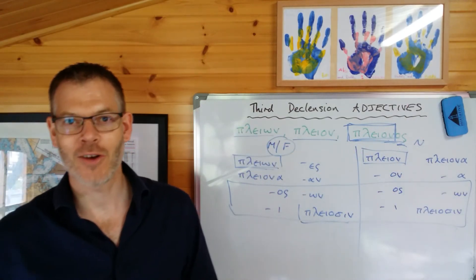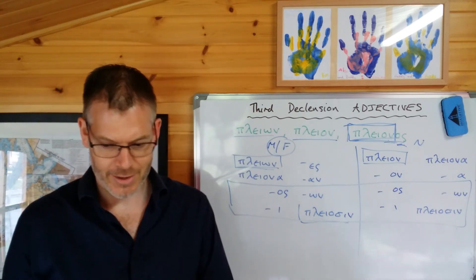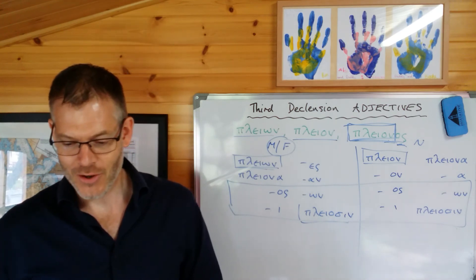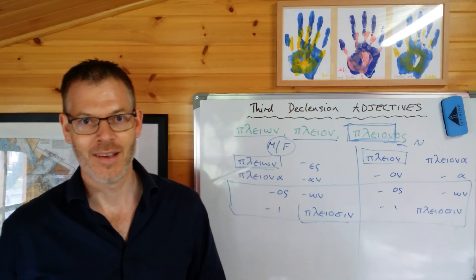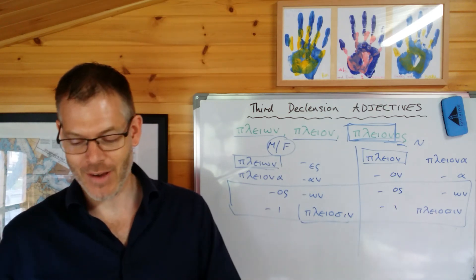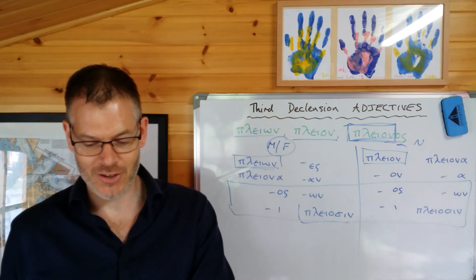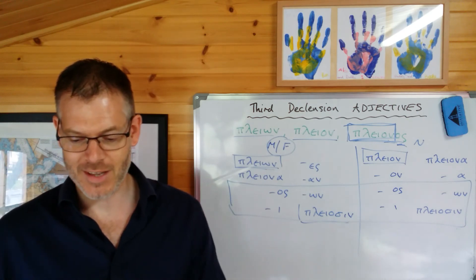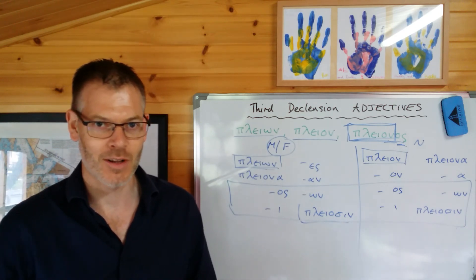It looks horrendously complicated because you've got this massive table to learn at the top of page 139, but it's really, really simple. You knew it already — you could have figured it out just from what you already knew. Not complicated. Keep going: 20 to 30 minutes a day, five or six days a week, and we will nail this stuff and have you reading the New Testament in Greek in no time at all. We're almost at the end of this chapter — we've just got a couple of other sections to go, then we'll do some examples and crack on to chapter 13. Well done. God bless. Bye for now.